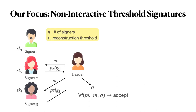Our focus in this work is on non-interactive threshold signatures. Consider an example where two out of three parties are required to sign. A user called the leader requests a signature on a message M from these two parties. Each party produces a partial signature, which they then send to the leader.